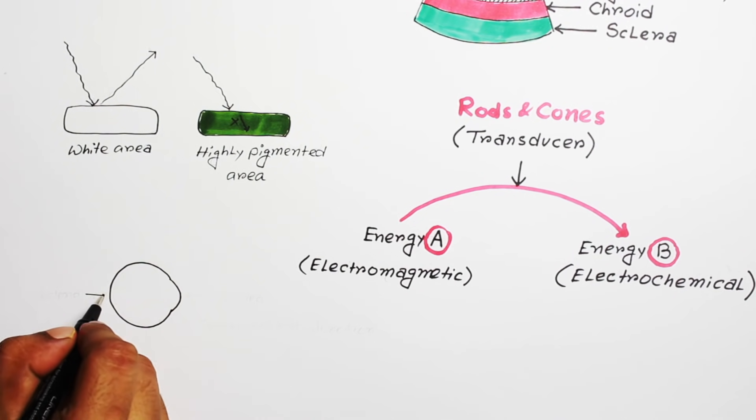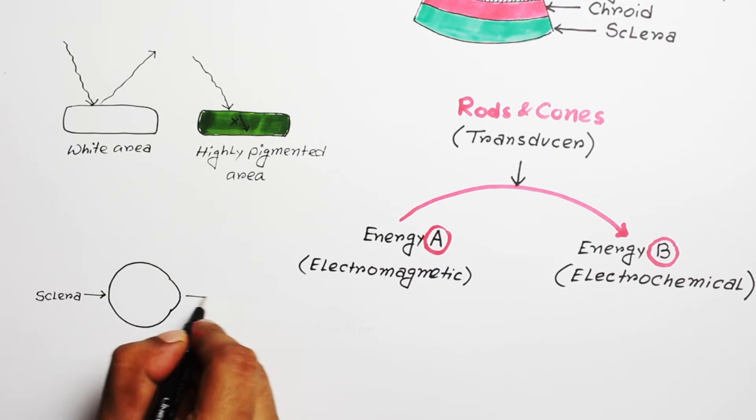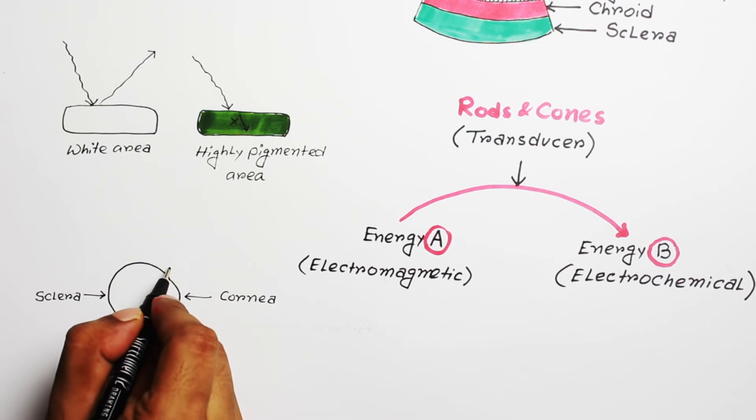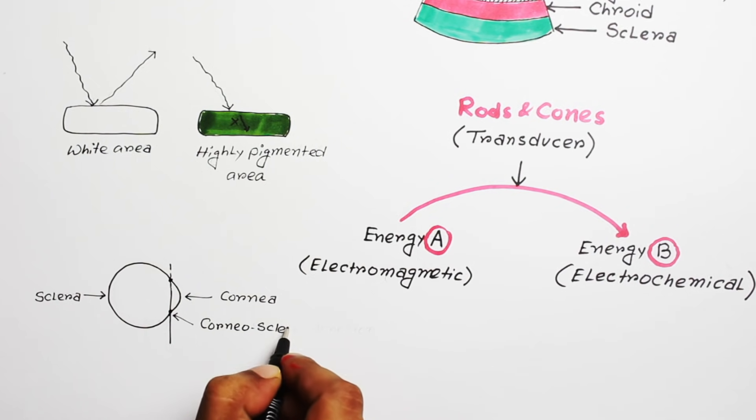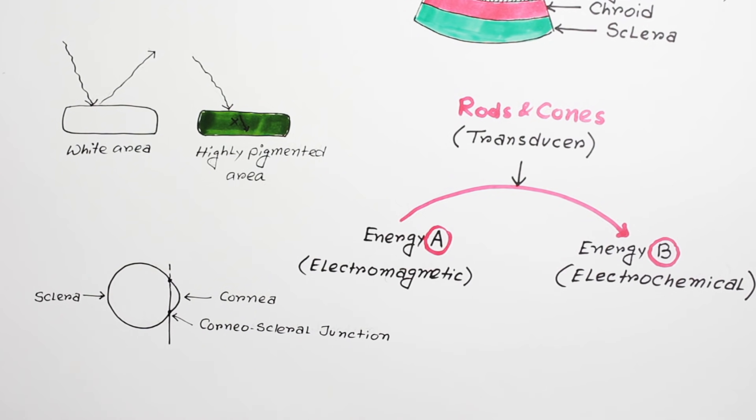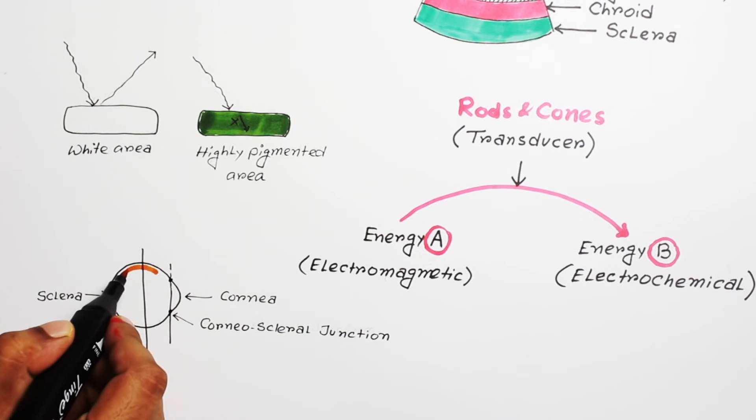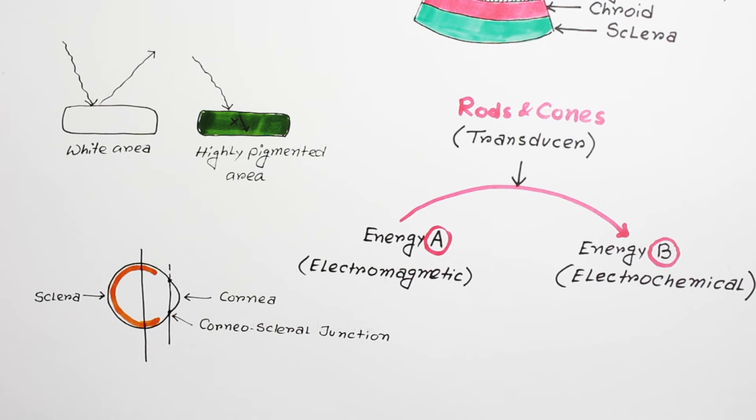Let me draw another diagram. This is sclera and this is cornea. So this portion is the corneoscleral junction and this is the coronal section. Actually, rods and cones extend from backward to forward and end somewhere between the middle of these two points.